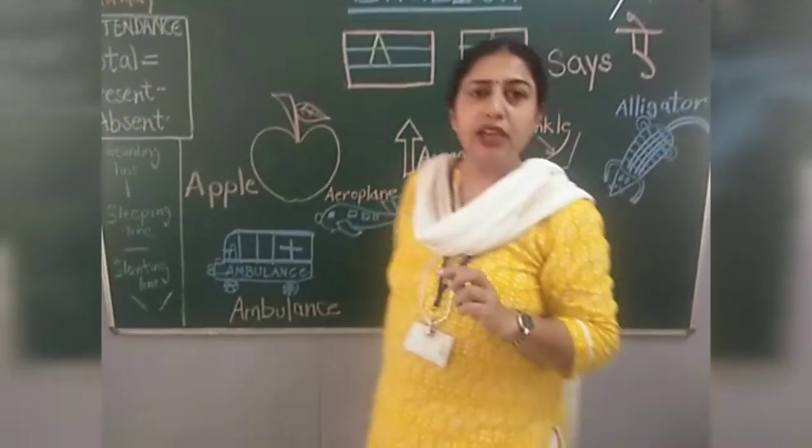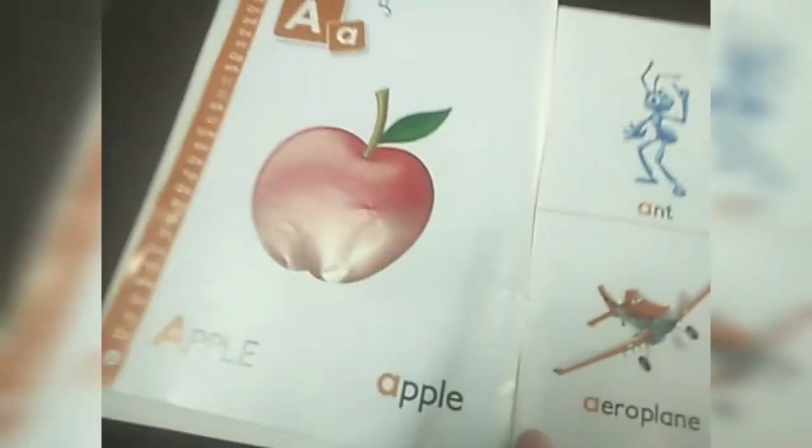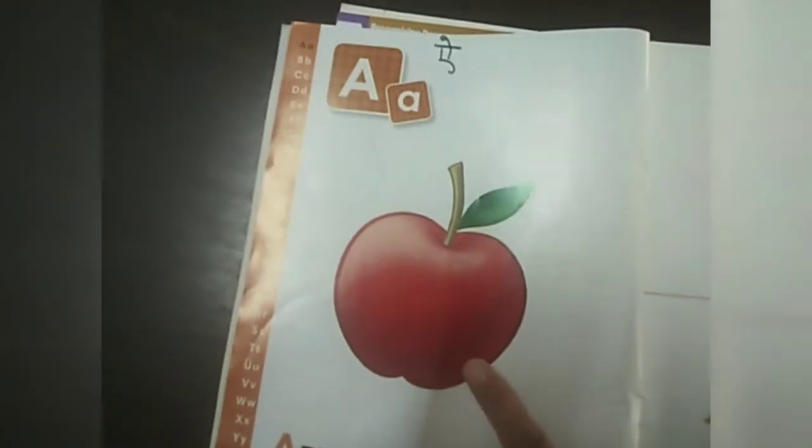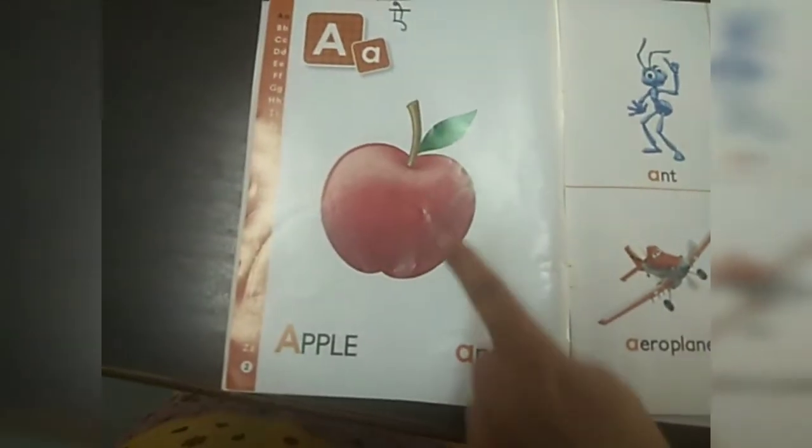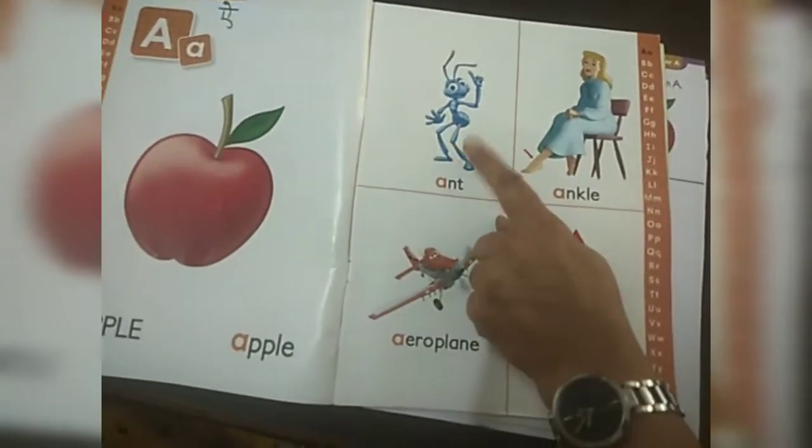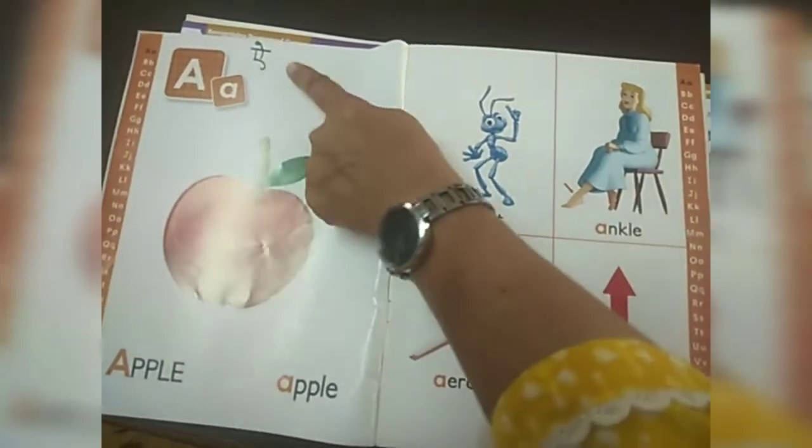Now we will do reading from our English Phonic Book. We will open the book and start reading. A, a, apple. A, a, ant. A, a, ankle.